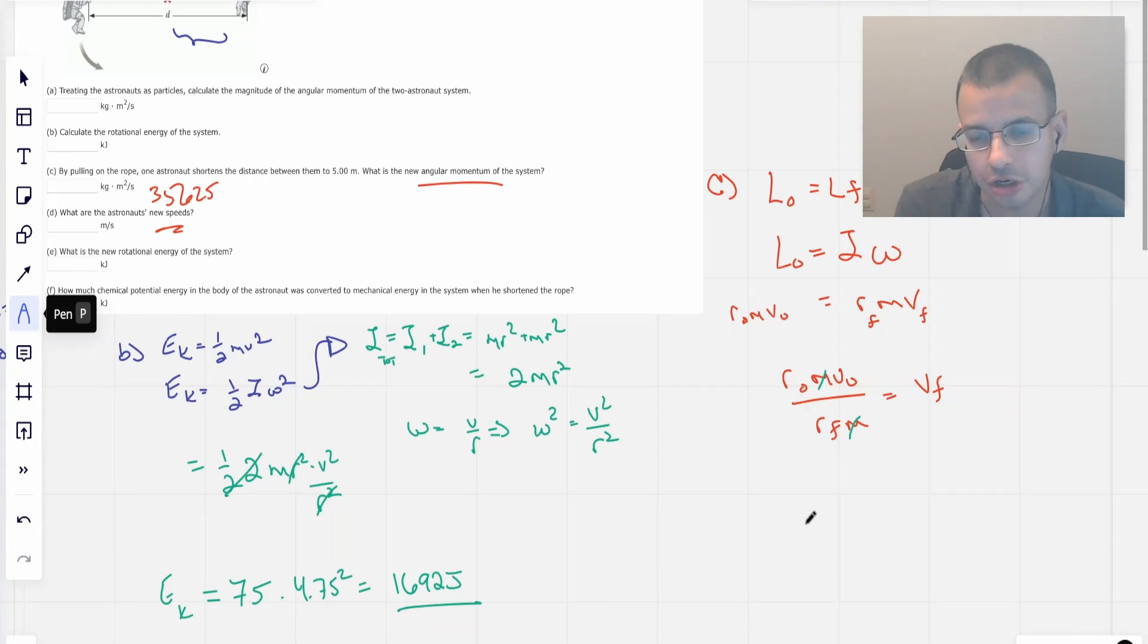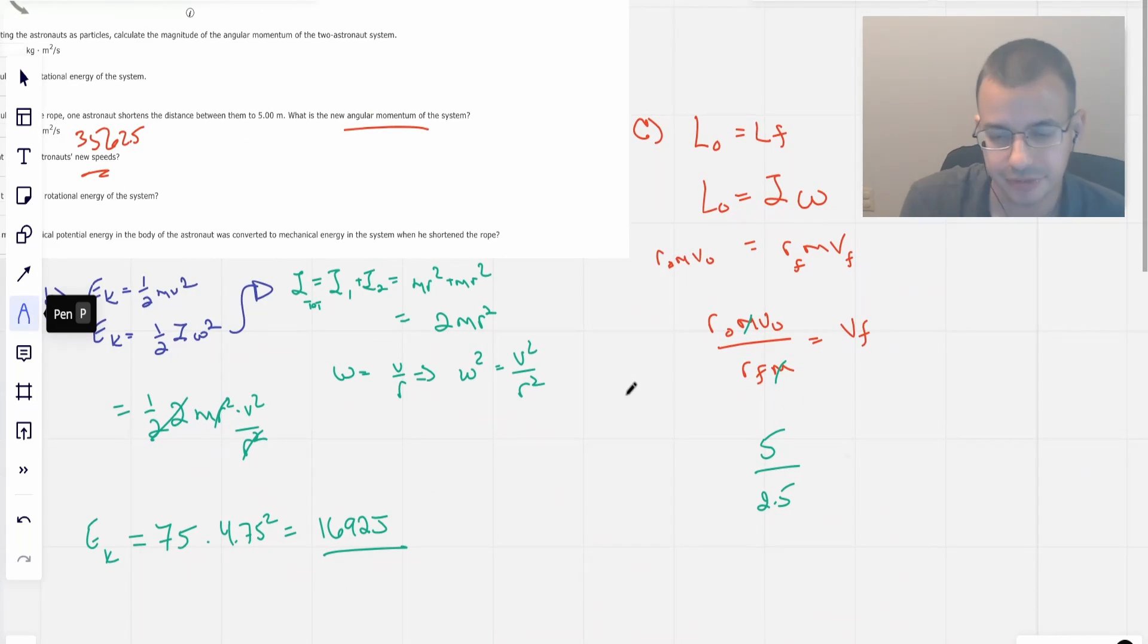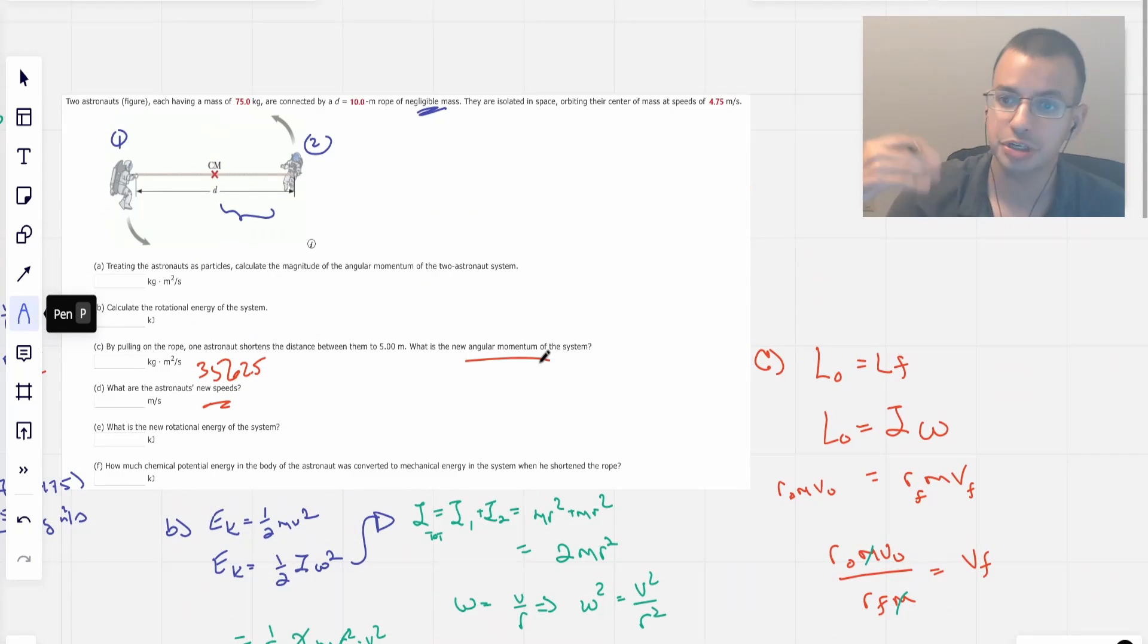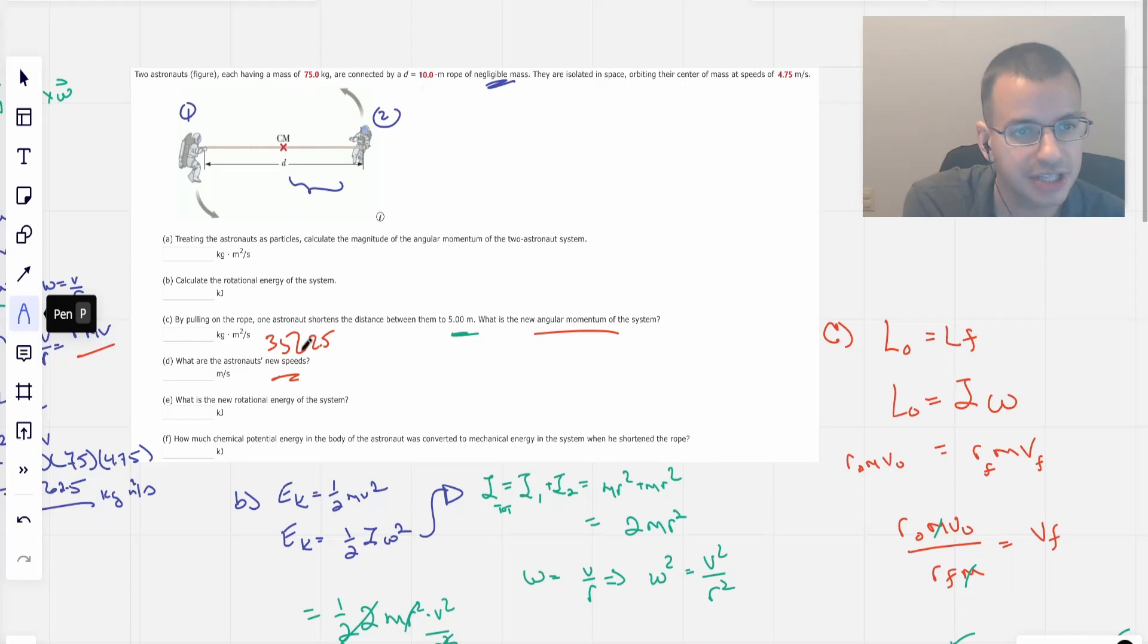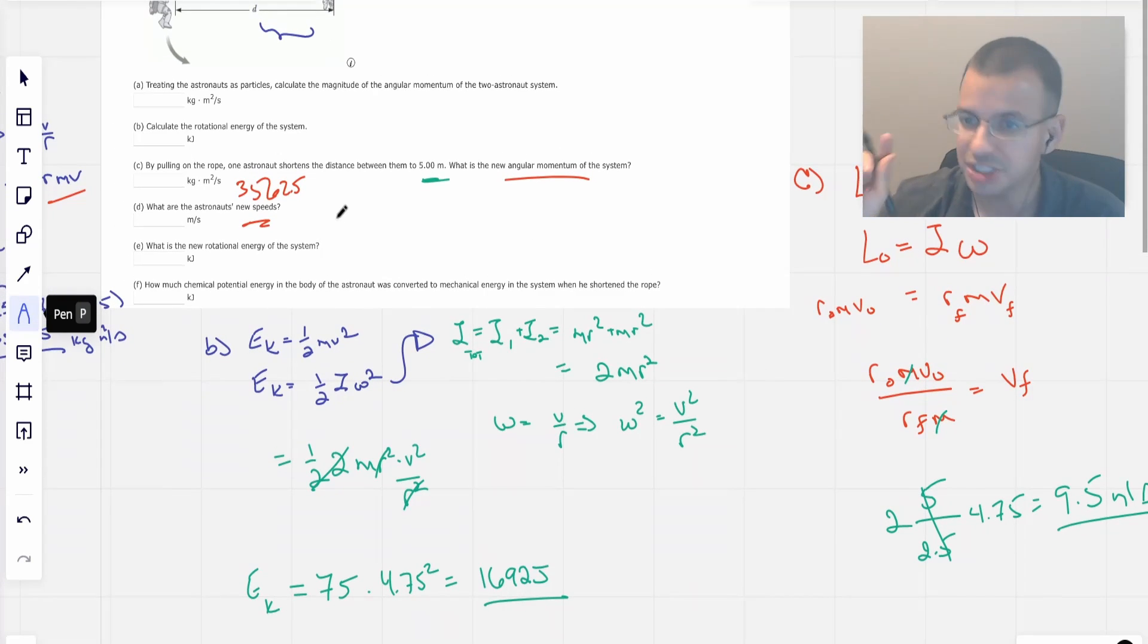We have an R initial of 5 meters because that's the radius. There's a distance separated by 10, half of that is 5. Our final is going to be 2.5, and their initial speed was 4.75. So then we do 4.75 effectively multiplied by 2, and that gives us 9.5 meters per second. So just now that they're twice as close, they're going to be moving twice as fast.